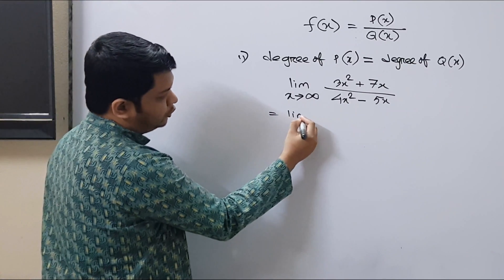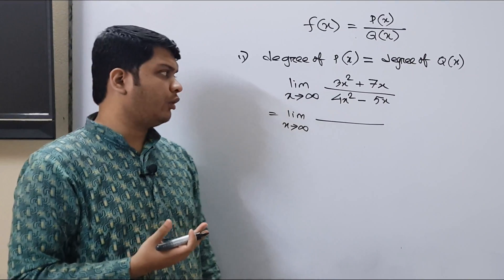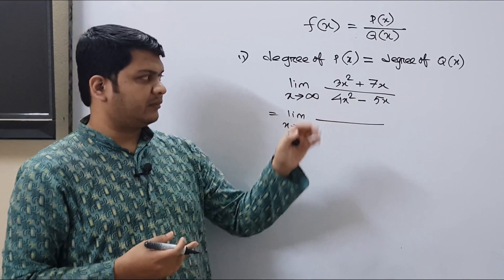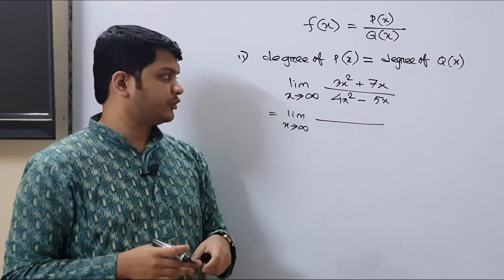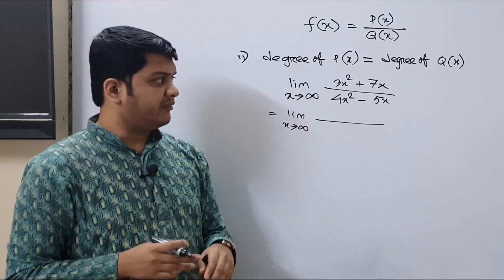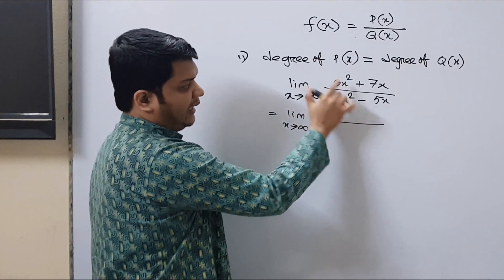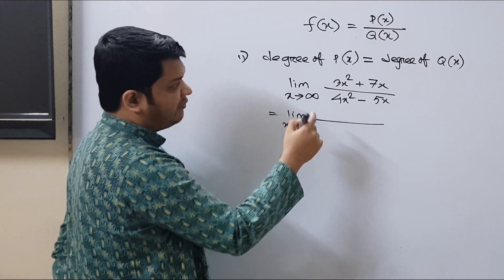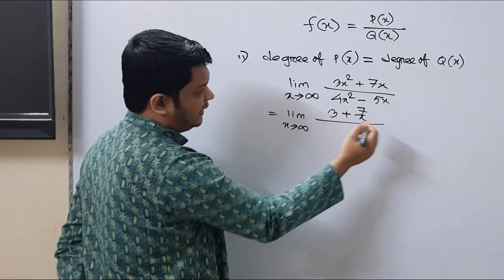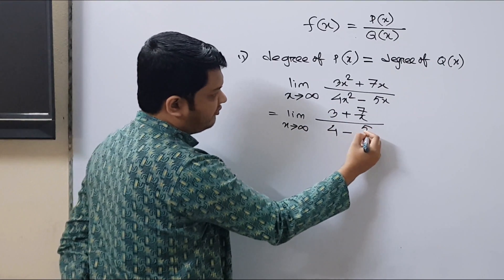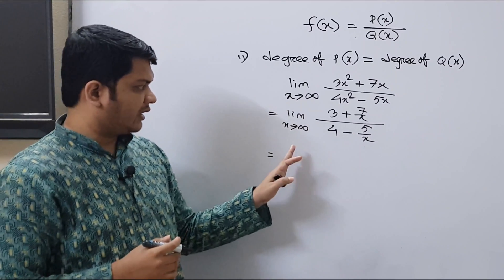If you already watched the previous video, we know that we need to divide both the terms in the numerator and in the denominator. Here we will divide all the terms by the maximum power, which is x². So dividing 3x² by x² gives 3, plus 7 divided by x; and dividing 4x² gives 4, minus 5 divided by x.